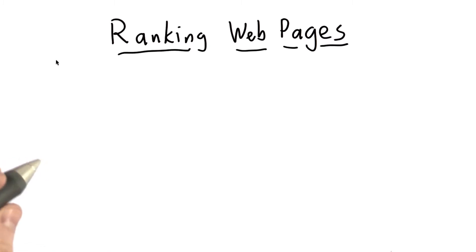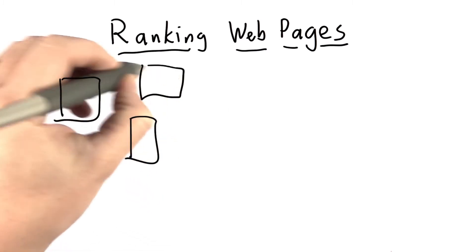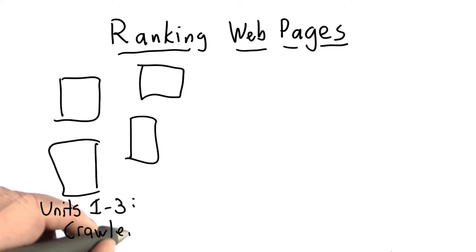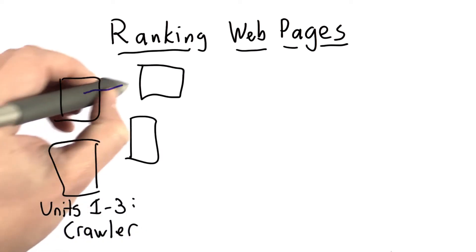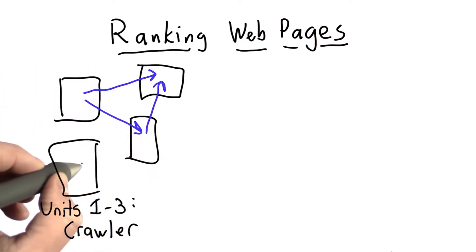Let's start by recapping how our search engine works. So we started by building a crawler, and this was what we did in units 1, 2, and 3. What the crawler did was follow all the links in the web pages, following those links, building up an index.